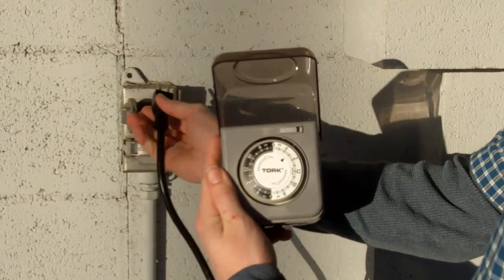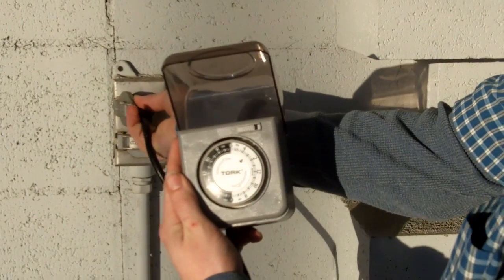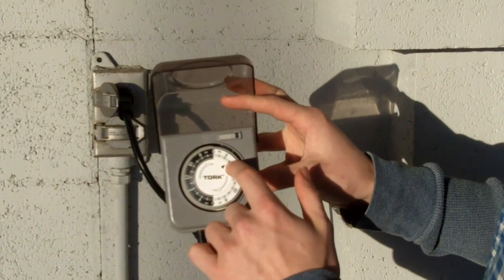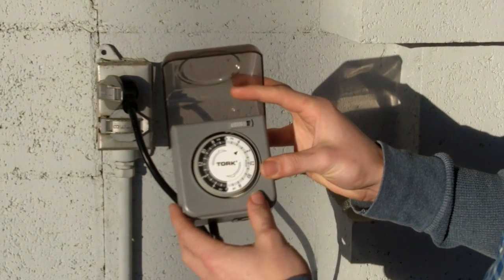You'll need to plug the timer in to actually power the clock inside it. On most models, they'll have a clock face that you'll turn to reflect the current time, which right now is about 3 in the afternoon.